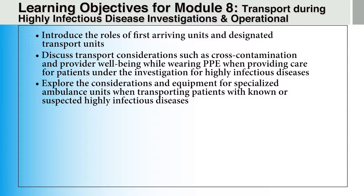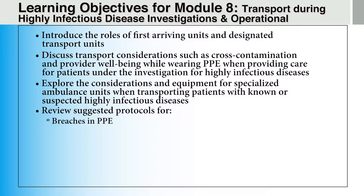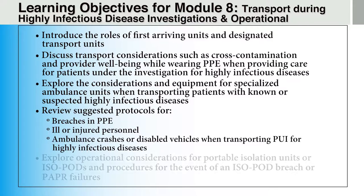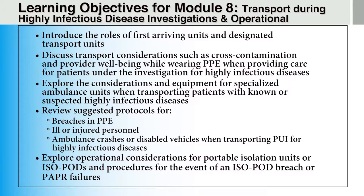We will explore the considerations and equipment for specialized ambulance units when transporting patients with known or suspected highly infectious diseases. We will also review suggested protocols for breaches in PPE, ill or injured personnel, and ambulance crashes or disabled vehicles. Finally, we will explore operational considerations for portable isolation units, or isopods, and procedures for the event of an isopod breach or PAPR failure.